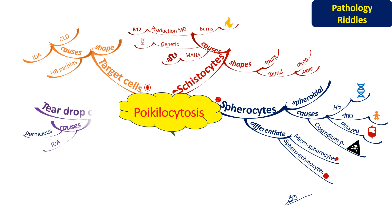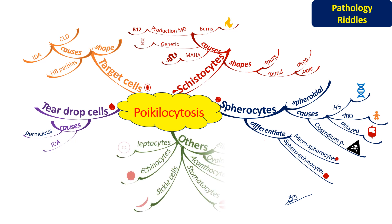Next we have teardrop cells. As the name suggests, they are in the shape of a teardrop and may be found in a variety of conditions including iron deficiency anemia and pernicious anemia. Then we have elliptocytes, which are elongated RBCs seen mainly in hereditary elliptocytosis and also in iron deficiency anemia.